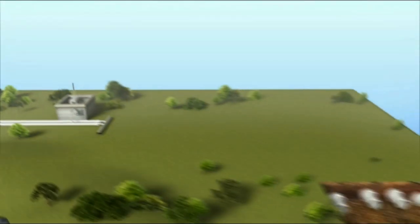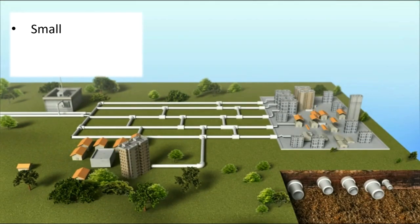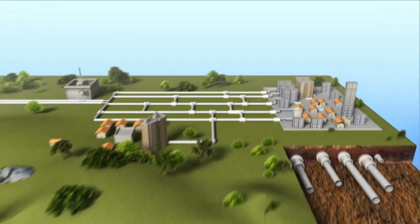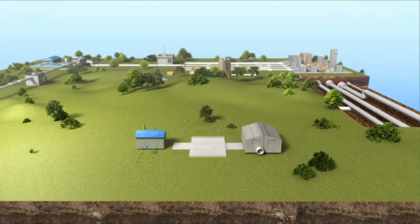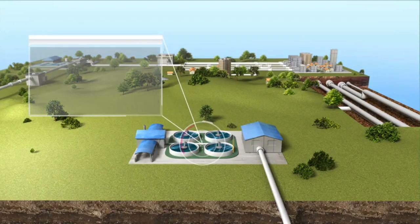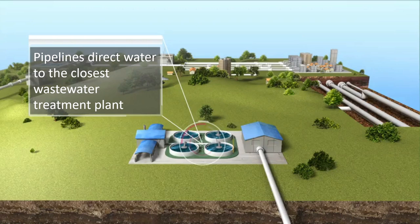To collect wastewater and transport it to sewage plants, small sewer pipes of a four inch diameter carry wastewater to larger pipes that form a collection system in a community. From the collection system, wastewater is directed through pipelines to the closest wastewater treatment plant. If wastewater must flow uphill, pumping stations are used to overcome gravity forces.